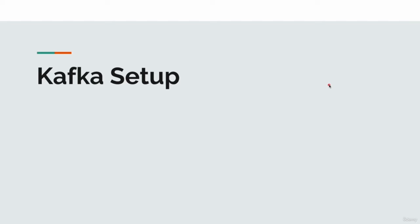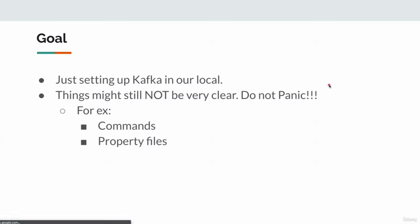In this section, we are going to set up Kafka for our local development, testing, and learning. Our goal in this section is simply setting up Kafka locally — nothing else. Things will still not be very clear at first, and that is totally okay. Please do not panic. You might wonder what a command or property does without explanation — please be patient. To fully understand, we have to connect various dots. We will talk about the individual dots first, then eventually connect them all and things will make sense later.